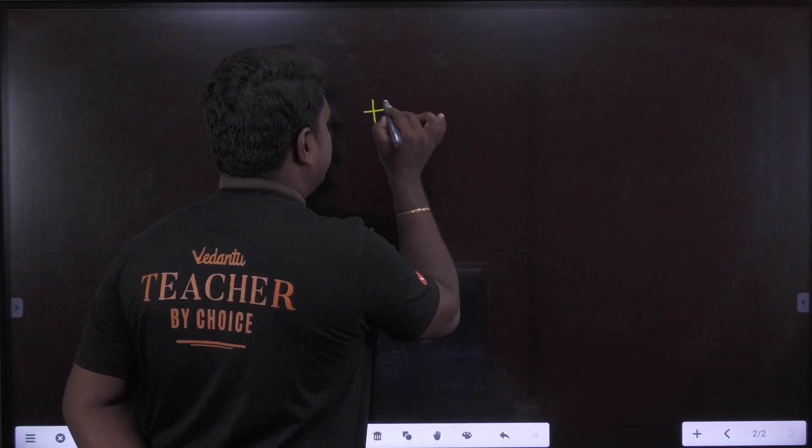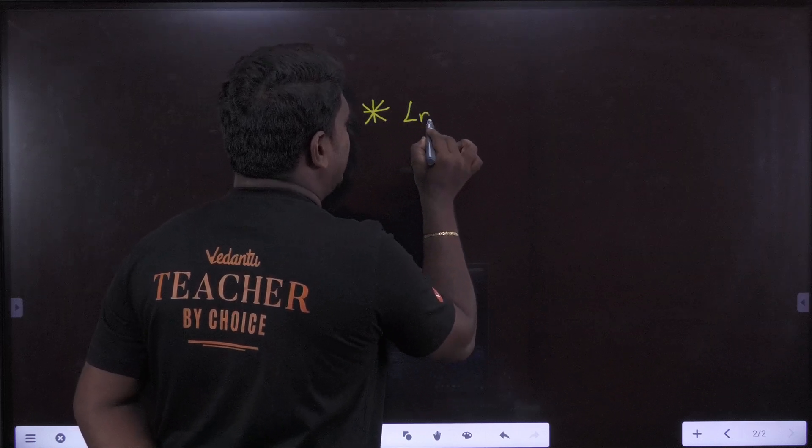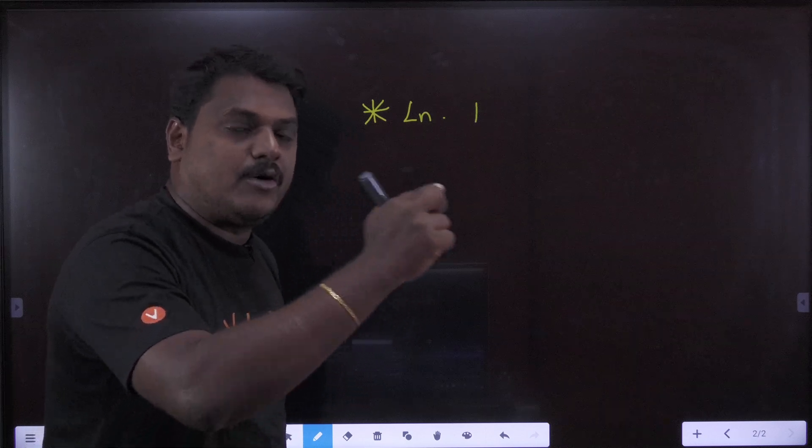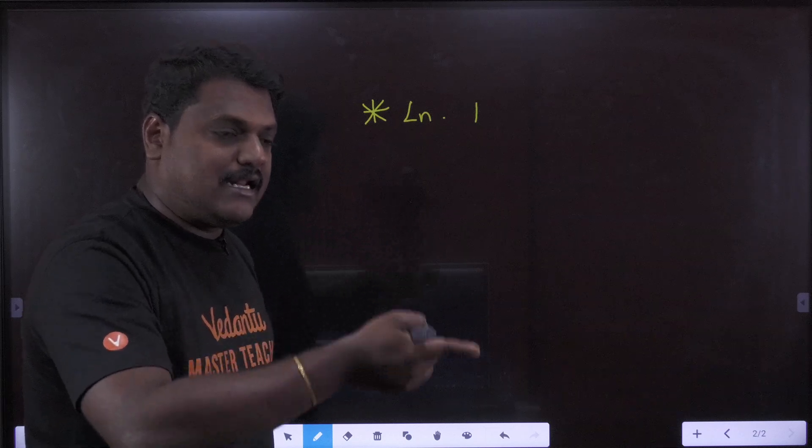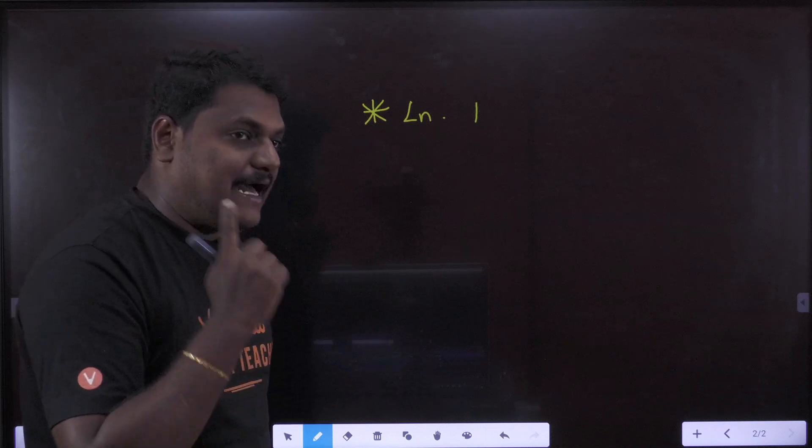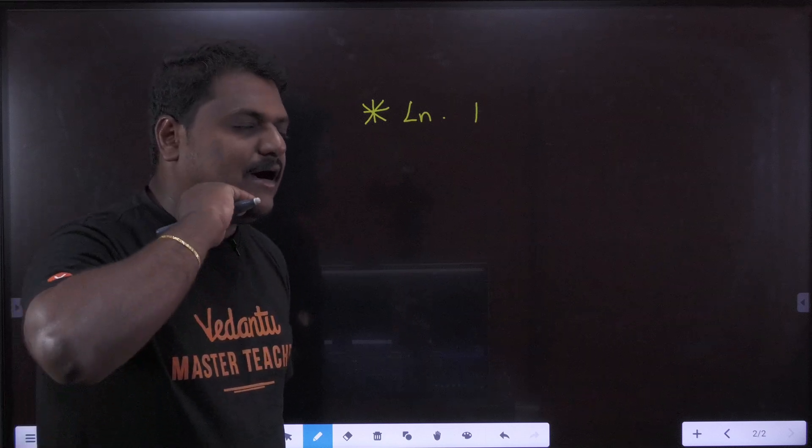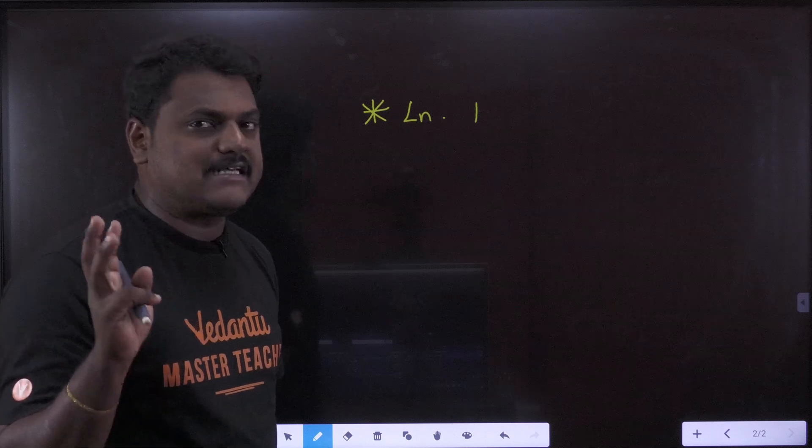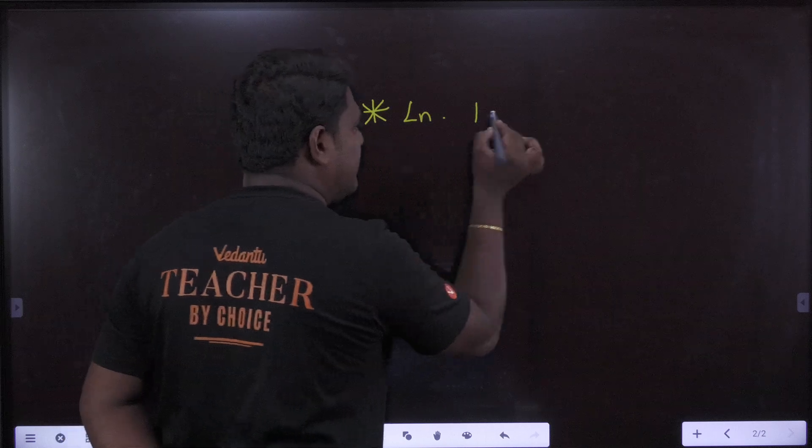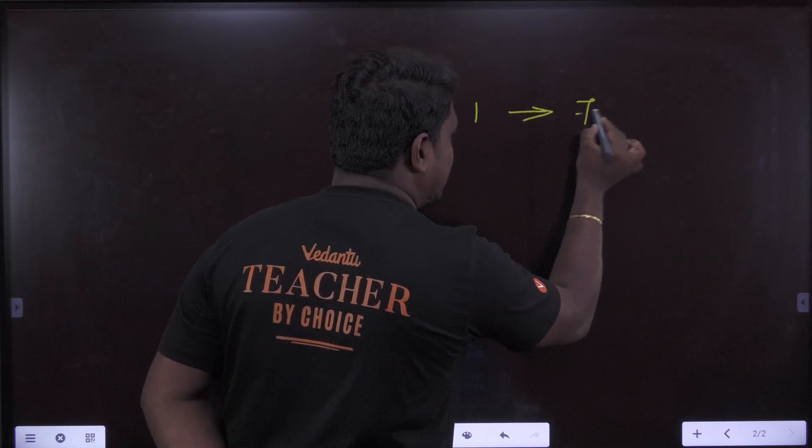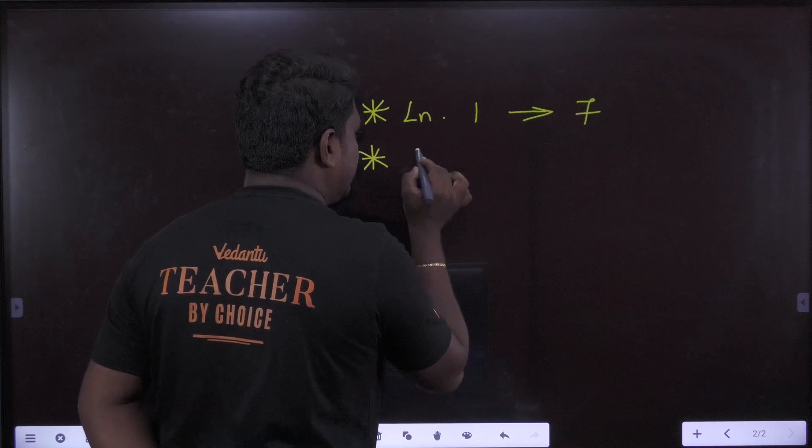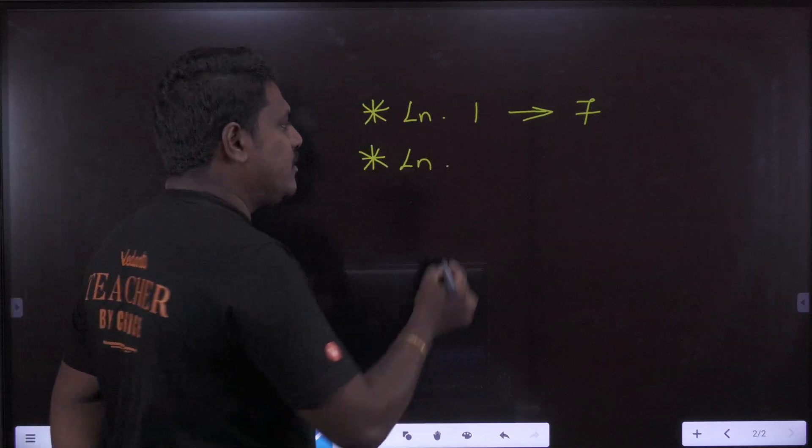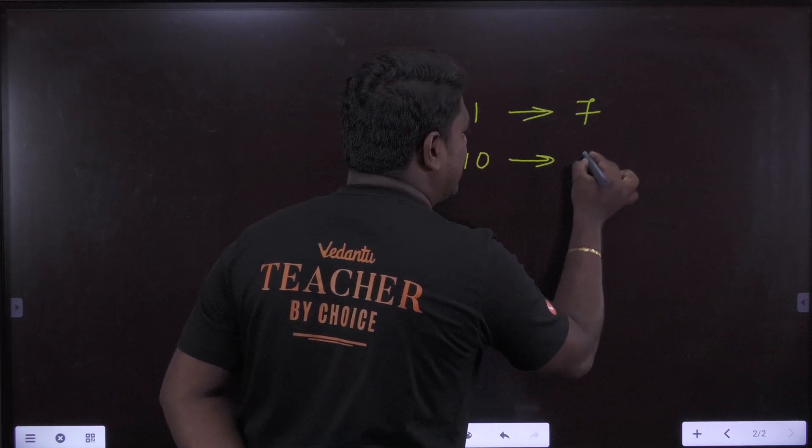I always give importance to lesson number 1. This is for late bloomers, average, and toppers - three different lessons. If you are learning all of these lessons, definitely you will learn how to approach them. That is very important. This is going to be a 10th lesson. You can get around 11 marks.